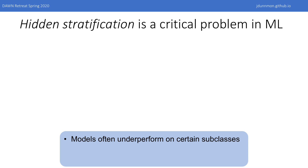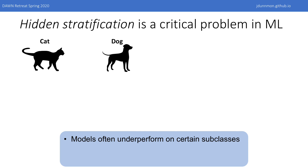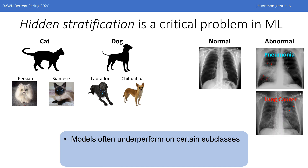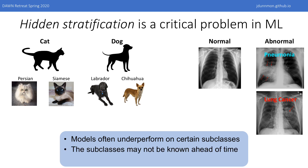Before diving into our approach, it's useful to restate a precise definition of hidden stratification. Specifically, classification models are usually trained to optimize for average performance, and as a result, they can often underperform on certain subclasses of the data — we call this phenomenon hidden stratification. For instance, we may be classifying images of cats versus dogs, but within these two superclasses there may be many different breeds of each animal. Similarly, we might classify chest X-rays as normal or abnormal, but abnormal could mean many different things: pneumonia, lung cancer, and so on. A major challenge in both recognizing and correcting for hidden stratification is that subclass labels might not be available, even if the superclasses are labeled. Our goal is to make models more robust to hidden stratification effects without requiring the subclass labels — specifically, to ensure good performance on every subclass without necessarily knowing what the subclasses are.